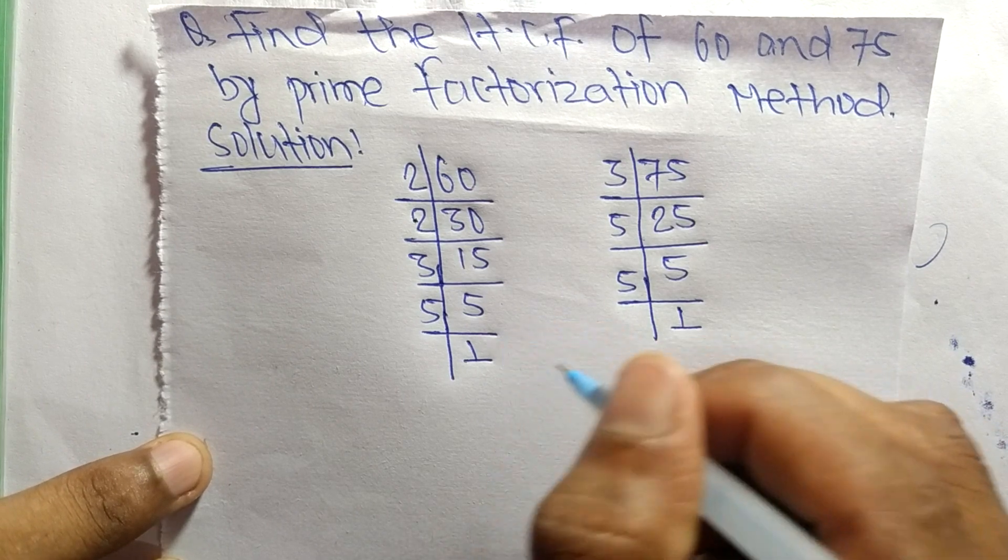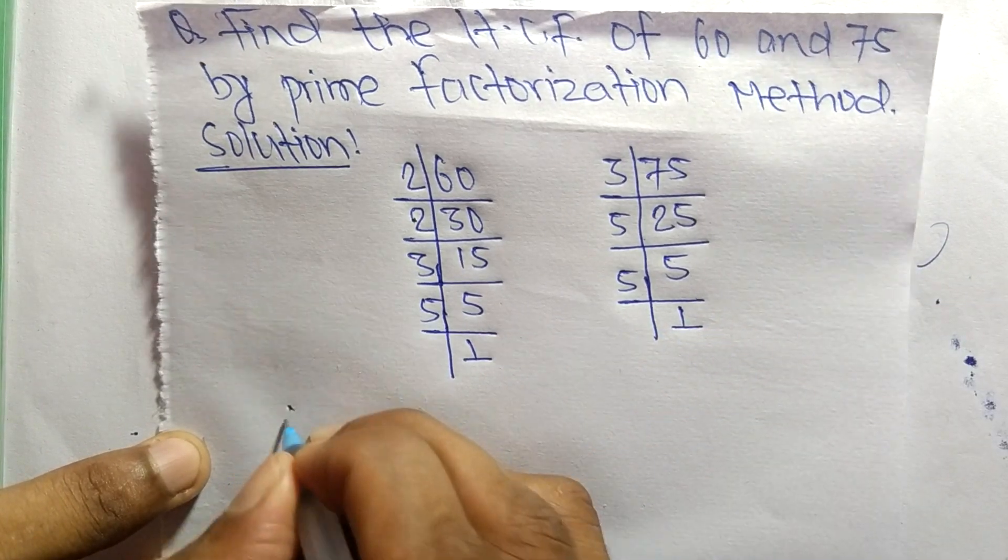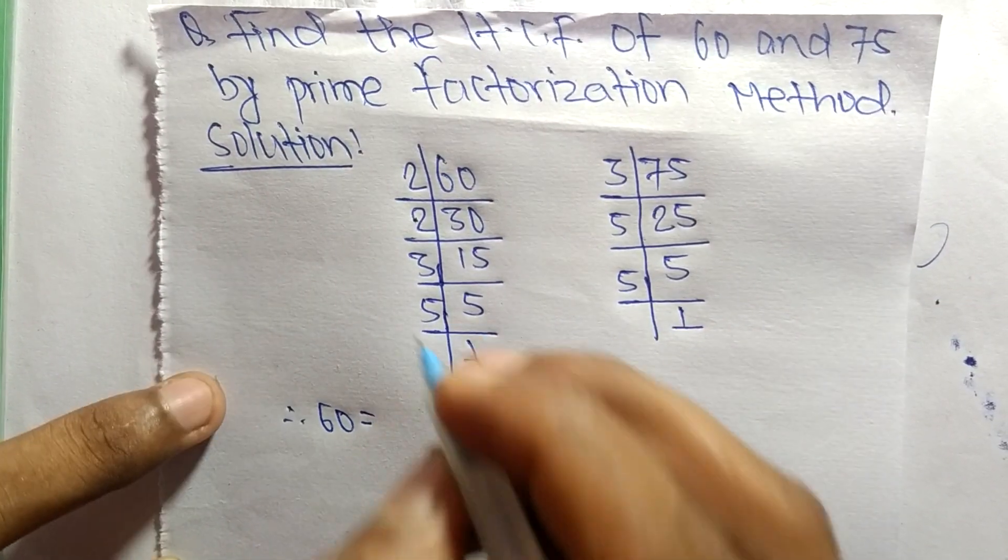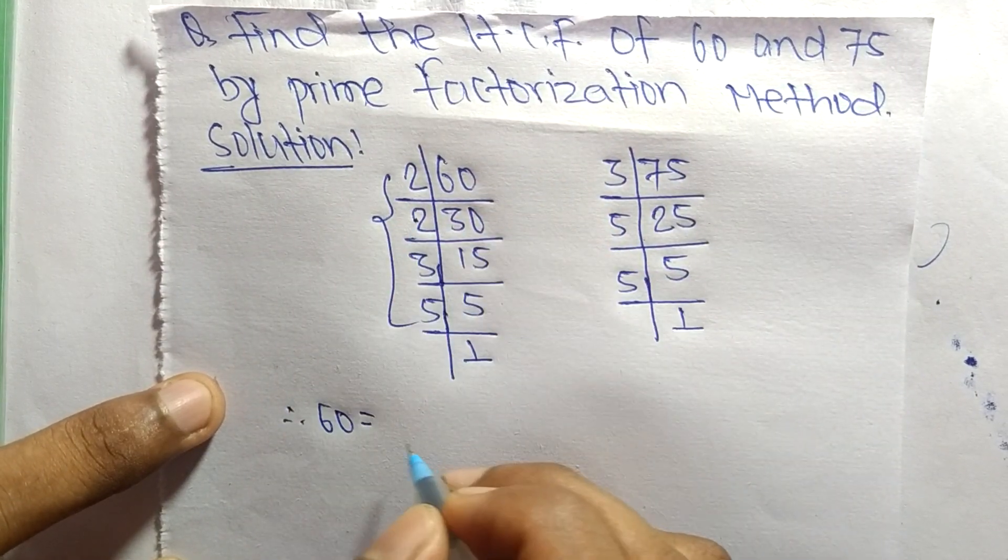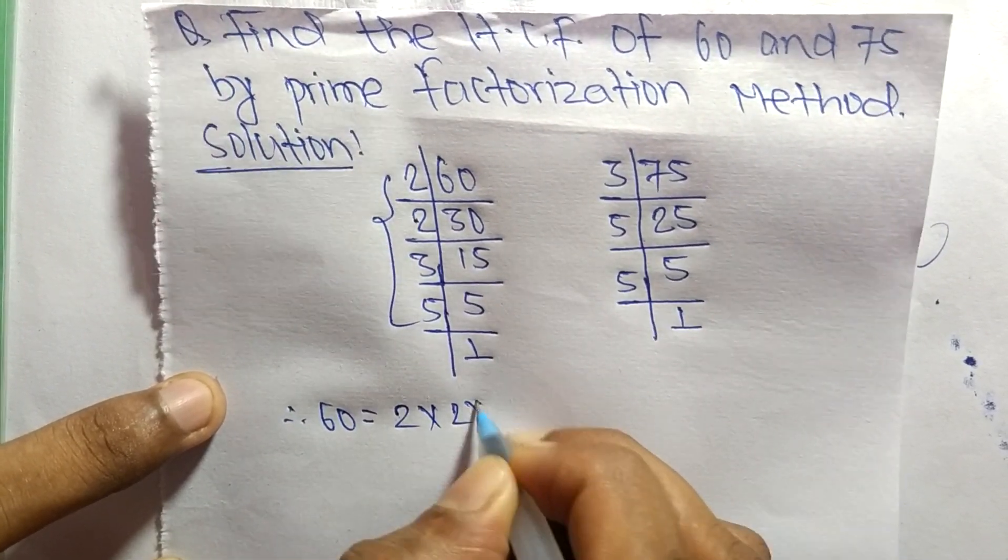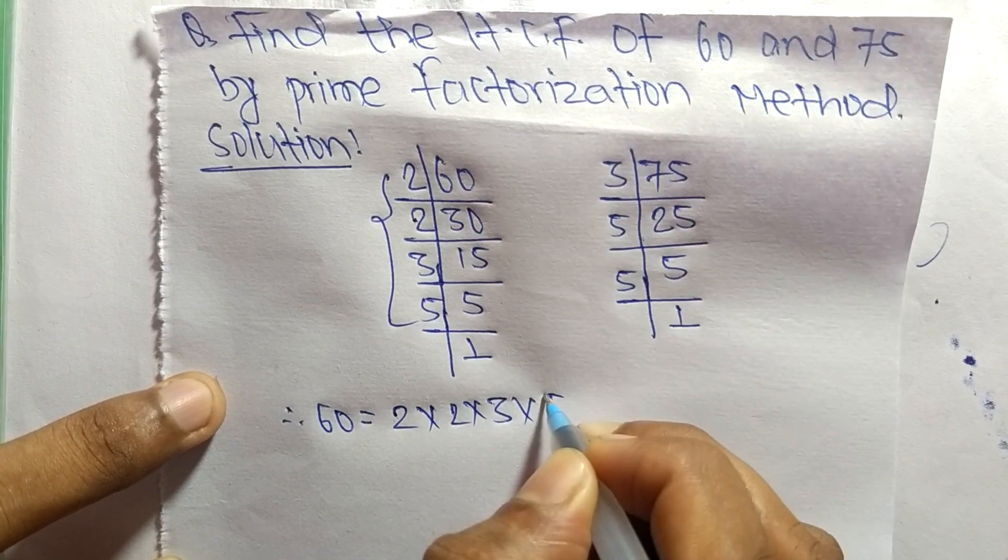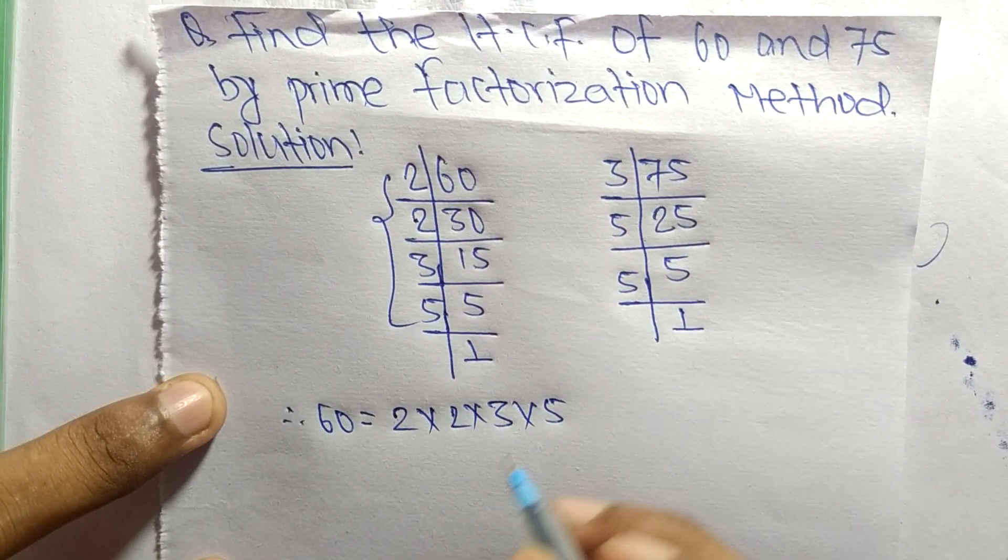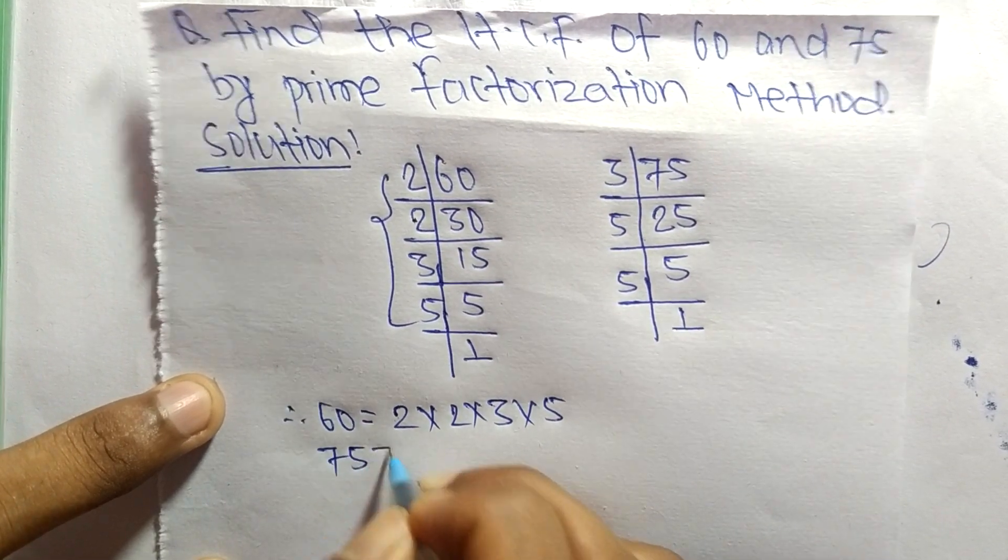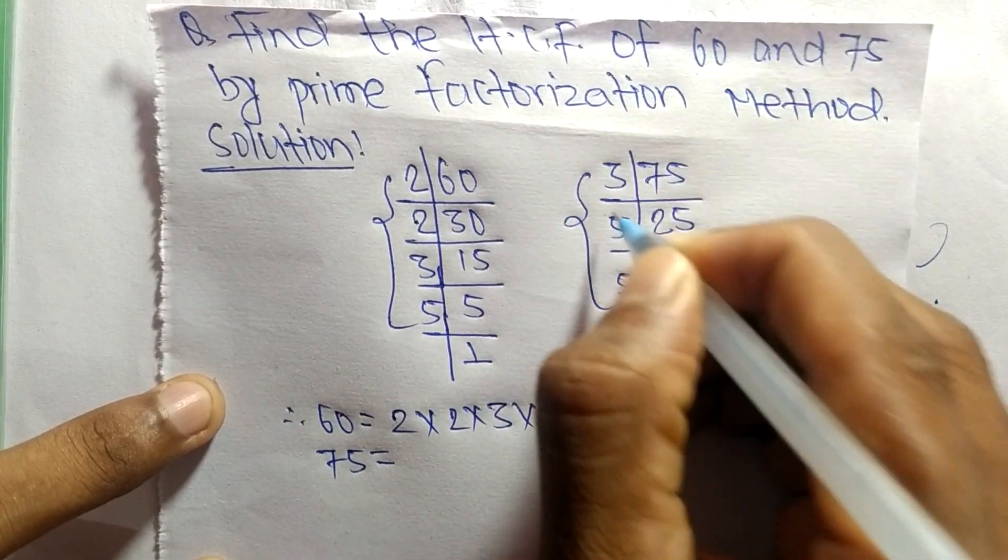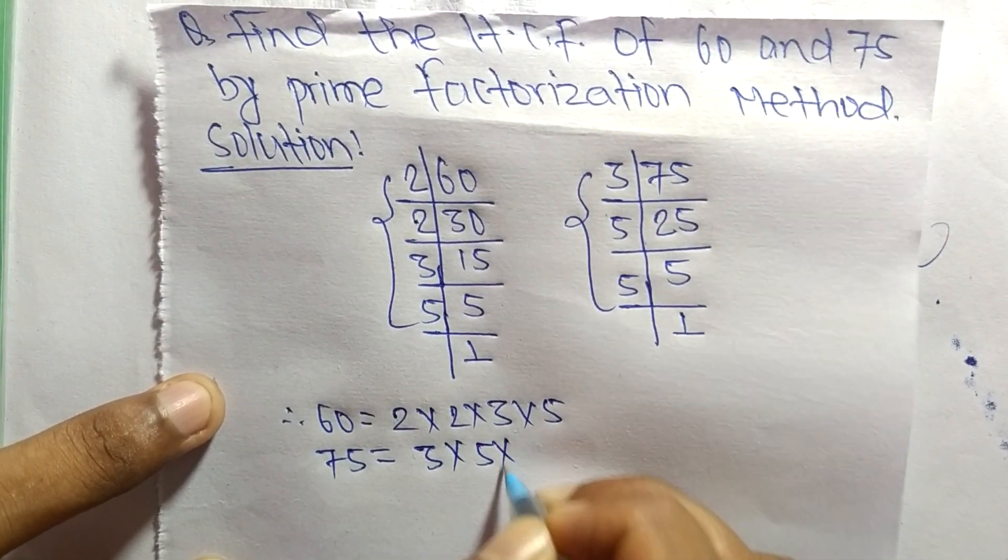Now from these prime factors, we can write 60 equals 2 times 2 times 3 times 5. Similarly, 75 equals 3 times 5 times 5.